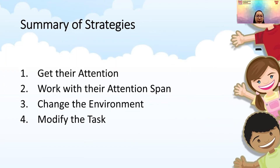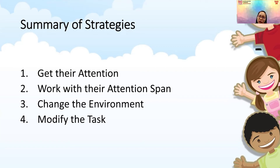So in summary, the four strategies I've shared today are: number one, get their attention — establish eye contact, use physical touch; number two, work with their attention span — observe how long they can stay on a task and build from there; number three, change the environment — make it clean, not cluttered, and remove distractions; and number four, modify the task — make it more fun and engaging for your child. I encourage you to pick one or two strategies and do them consistently. Results may not show immediately — it takes about three weeks for a new habit to form and another three weeks to make it permanent.